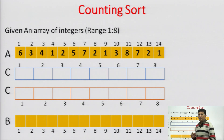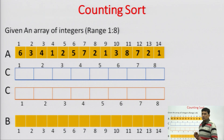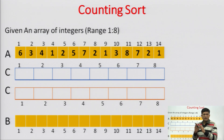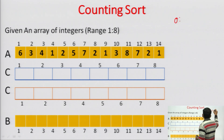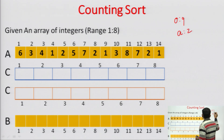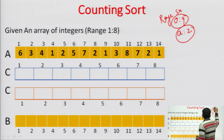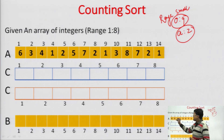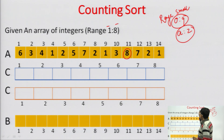For counting sort, we are given some numbers. These numbers must be in a very small range — this is the limitation of counting sort. The range of the numbers is very restricted, for example 0 to 9, or if sorting alphabets, then a to z only. The range must be small. Array A is the original array, and the largest number is 8.